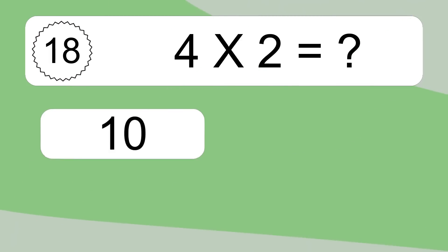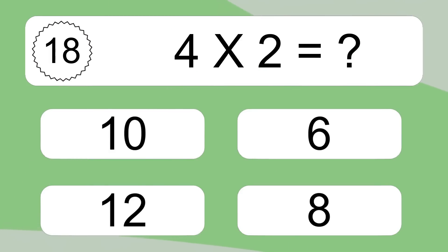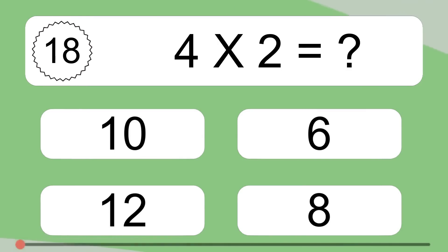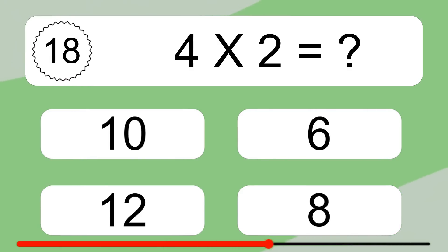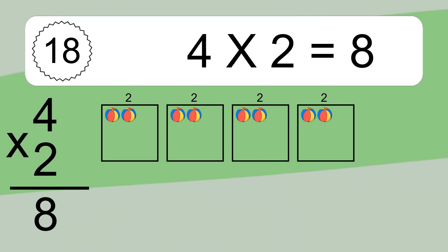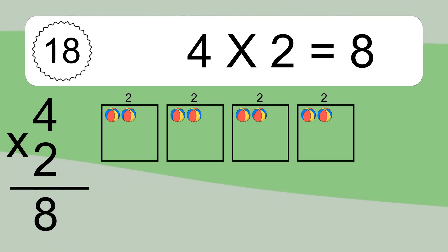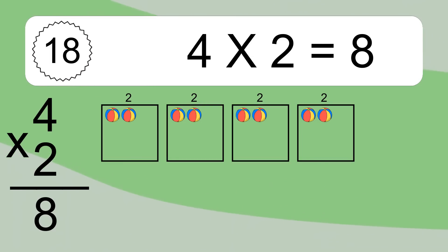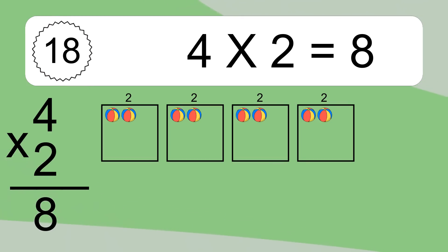4 times 2 equals what? 4 times 2 equals 8. We have 4 boxes and each box has 2 colorful balls inside. If you count all the balls in all the boxes together, you will have 4 times 2 balls. This equals 8 balls.